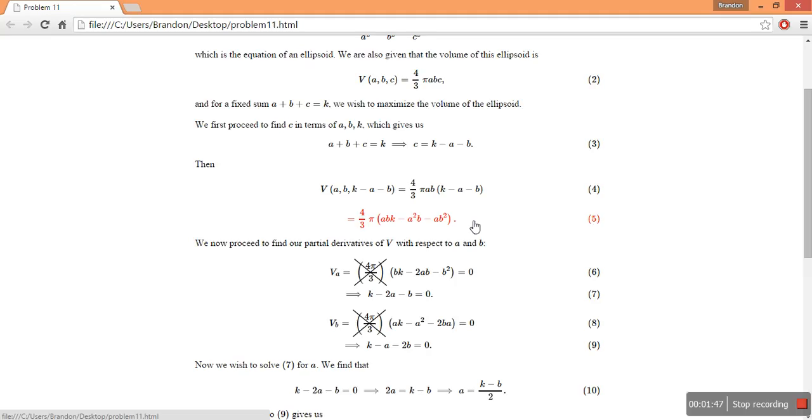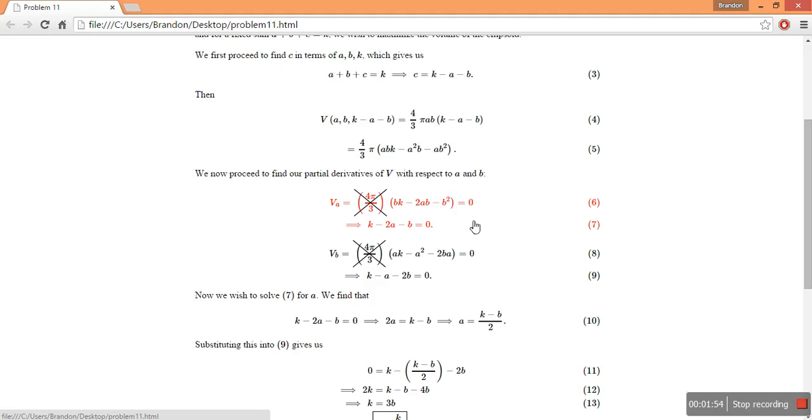Now we're going to find our partial derivatives because we want to find our critical points. So the first partial derivatives with respect to a and with respect to b that I've denoted with subscripts are simply b, k minus 2ab minus b squared. And I've set it equal to zero to find our critical points.